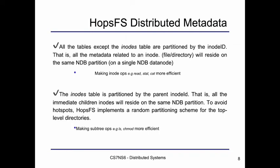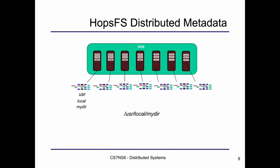In HopsFS's partitioning scheme, all tables except the INODES table are partitioned by INODE ID — that is, all metadata related to an inode will reside on the same NDB partition. The INODES table itself is partitioned by parent INODE ID, meaning all immediate children inodes reside on the same NDB partition. To avoid hotspots — a partition that receives most requests — HopsFS implements a random partitioning scheme for top-level directories. So the metadata for path components will reside on one NDB partition.